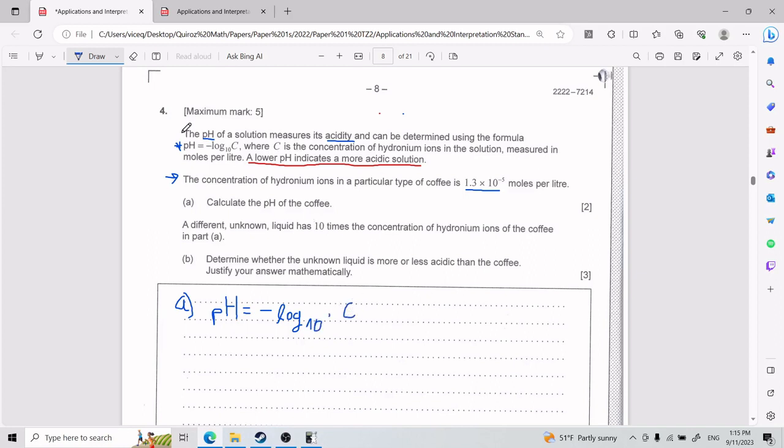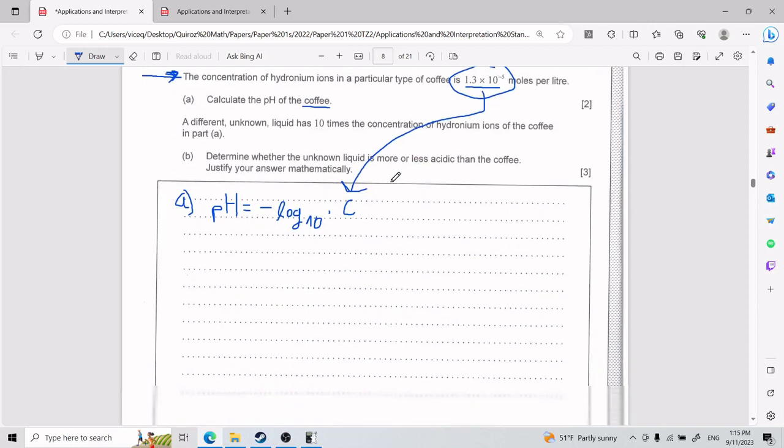And what is C again? C is a concentration of hydronium ions in the solution. And so for coffee, what is the concentration of hydronium ions in coffee? Well, it tells us here that the concentration of hydronium ions in a particular type of coffee is this number. So this number, we can plug it in there, and we will find the pH for coffee.